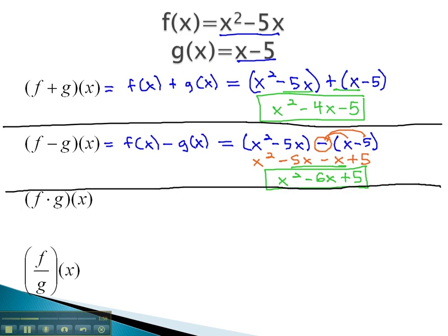Let's take a look at multiplication. Multiplication means we take f of x and multiply by whatever g of x is. As usual, we'll always put these substitutions in parentheses. So, f of x is x squared minus 5x, and g of x is x minus 5.